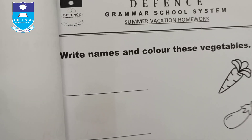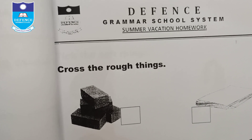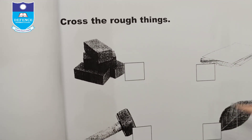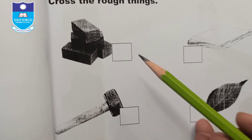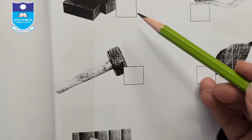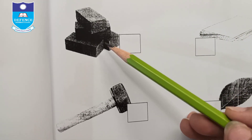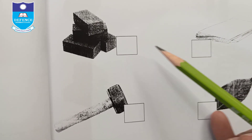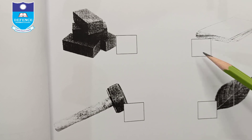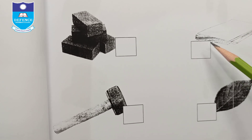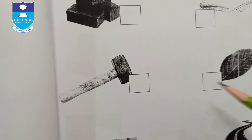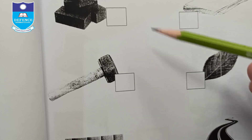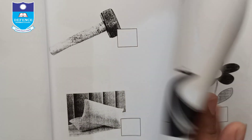Select the rough things. Cross the rough things — such as bricks, which are rough. Cross out the papers, which are plain and smooth. Similarly, cross all the things that are rough.